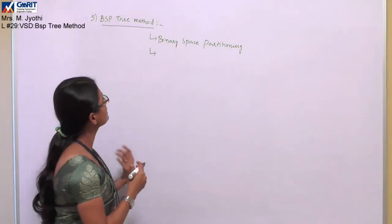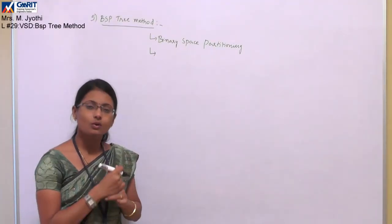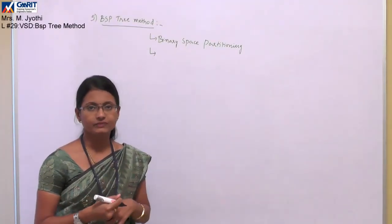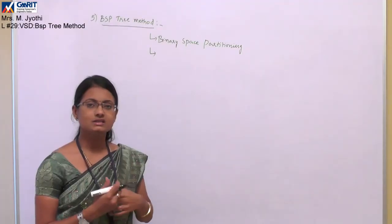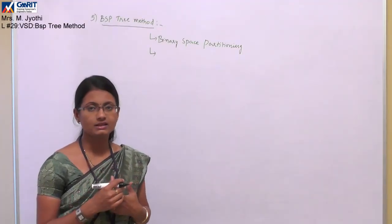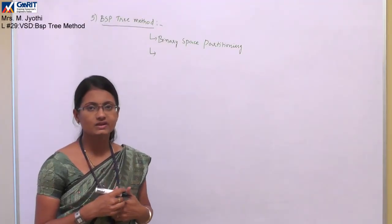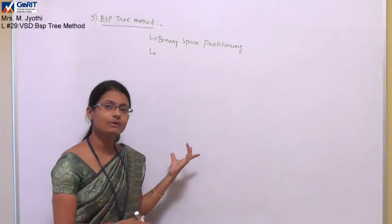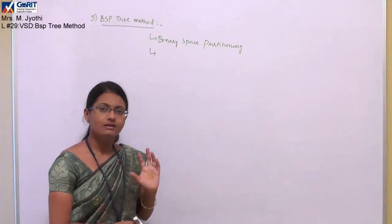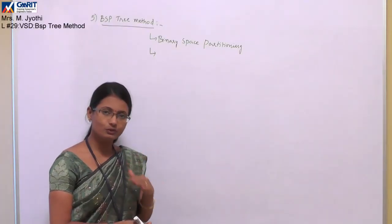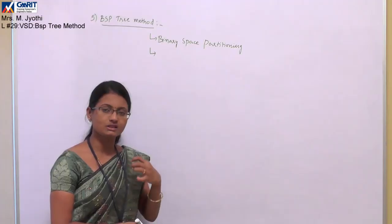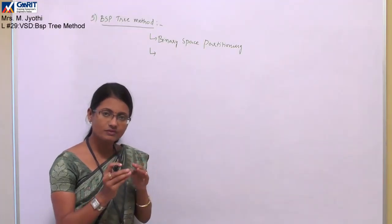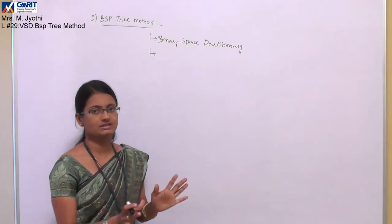This binary space partitioning method is used only when we are considering objects in 3D space, where each object consists of three coordinates: X, Y, and Z. This method is mainly applicable when the object viewing direction changes, but the object location, parameters, and vertices of the objects are fixed.